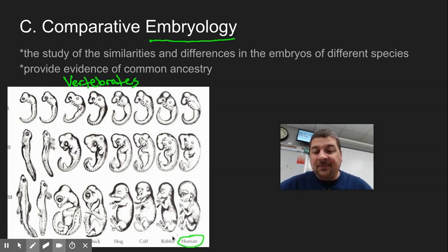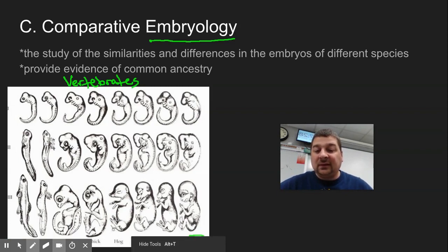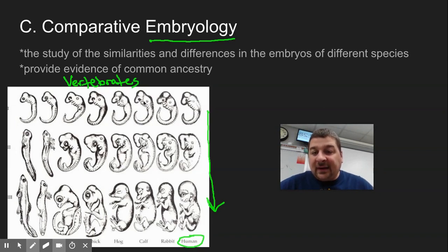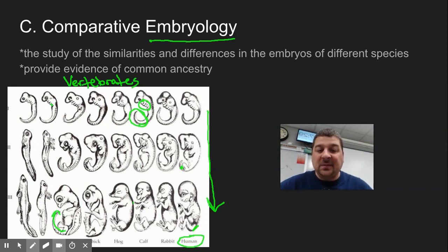This would be a chick, and here's a human on the end. You'll see that the chick, hog, and all of those look very similar early on. As development progresses, it becomes very different. We all had pharyngeal gill slits at one time. We all had a sort of early tail at one time. In a human, that slowly disappears, whereas other things like a little turtle keep that tail, and gills develop in the fish but not in the mammals.